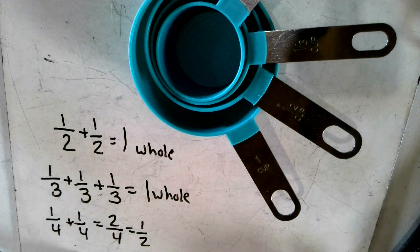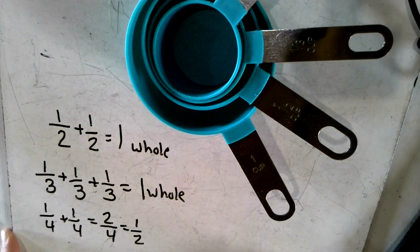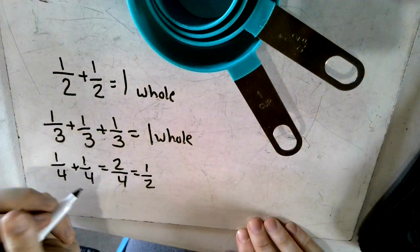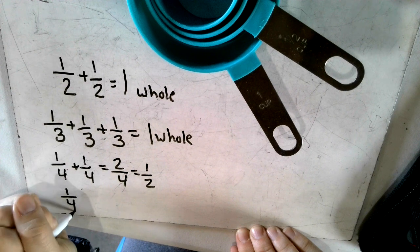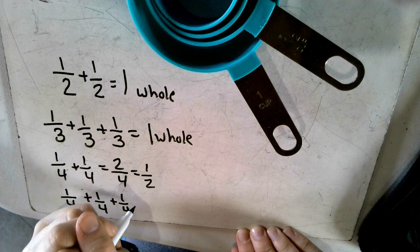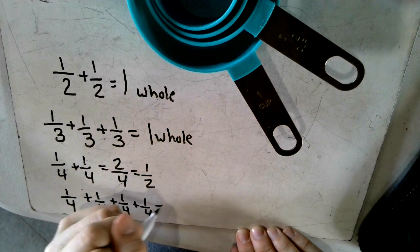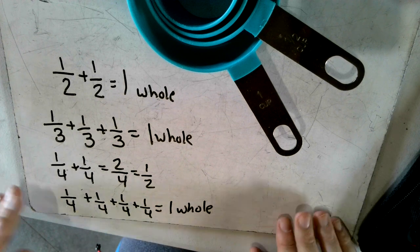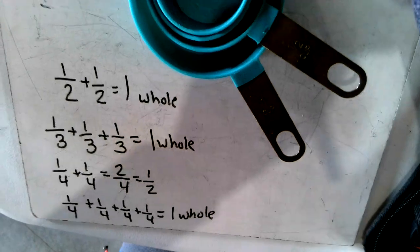Another way of looking at the fourths is, I'm moving my board down some, one fourth plus one fourth plus one fourth plus one more fourth equals one whole. So looking at the measuring cups, four cups...